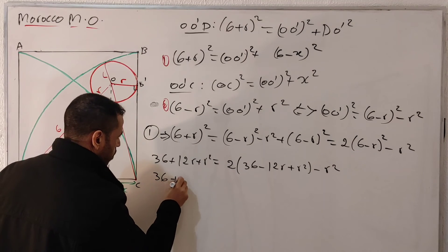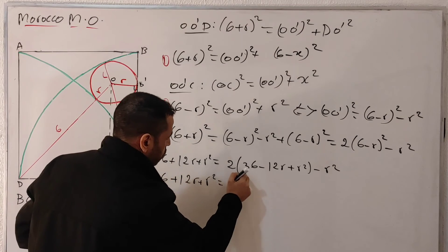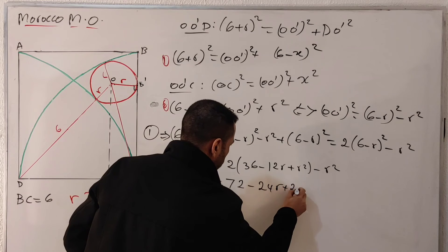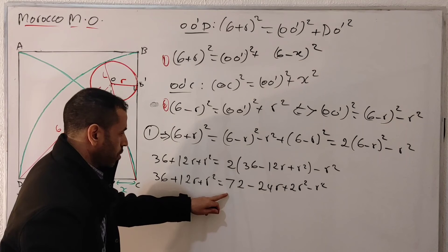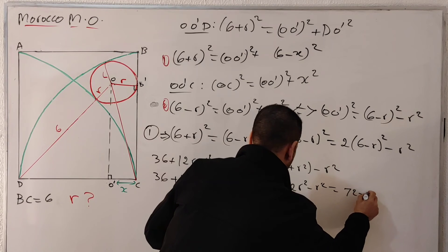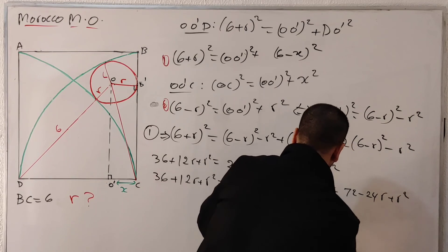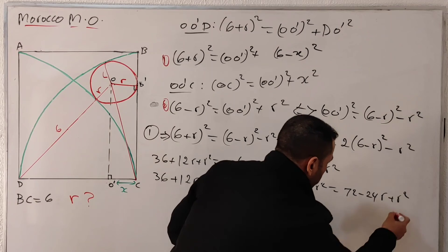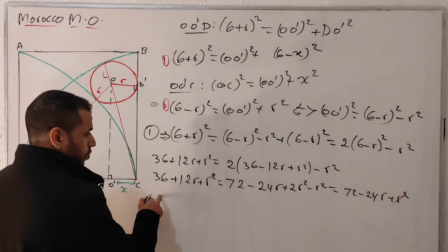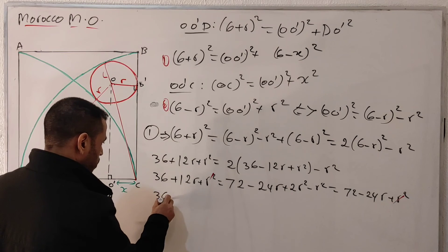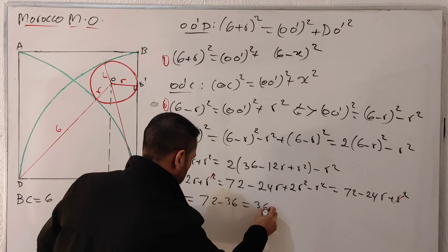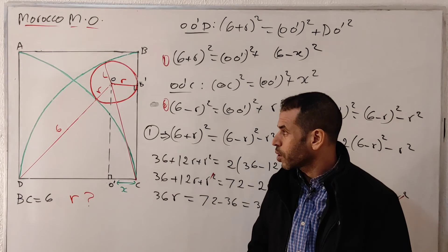So we have: 36 + 12r + r² = 72 − 24r + r². The r² terms cancel from both sides. Moving r terms to the left and numbers to the right: 12r + 24r = 72 − 36, giving 36r = 36, so r equals 1. I have solved this problem!